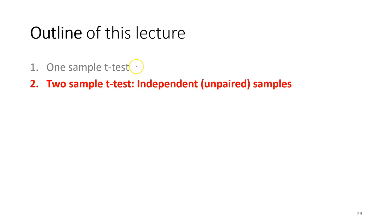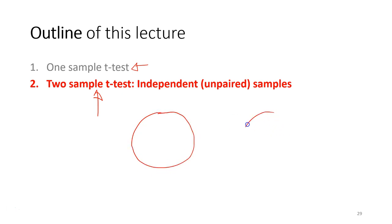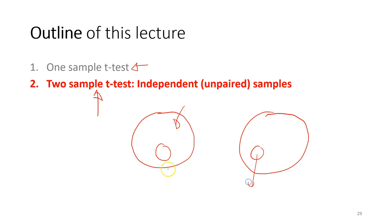In the previous lecture, you learned how to do a one-sample t-test. Now we are going to discuss the two-sample t-test. The two-sample t-test is used when we want to compare two populations. Since it is not possible to obtain parameters for the entire population, we take a sample from each population and then compare the samples, because each sample represents its respective population.